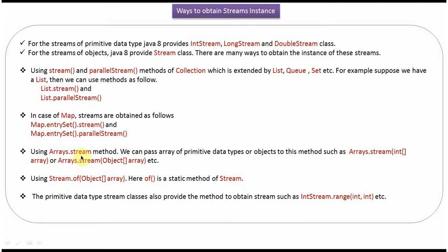Using the stream() method of the Arrays class, we can create a stream. The stream() method accepts an IntArray or an ObjectArray. Using the of() method of Stream, we can create a stream. The of() method accepts an ObjectArray, and it is a static method of Stream.